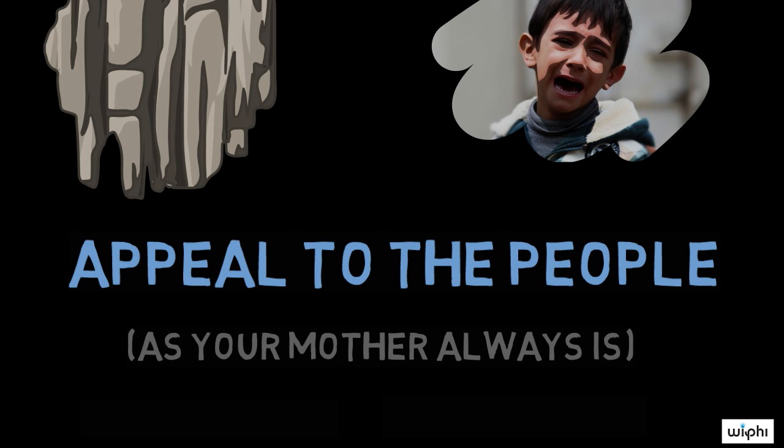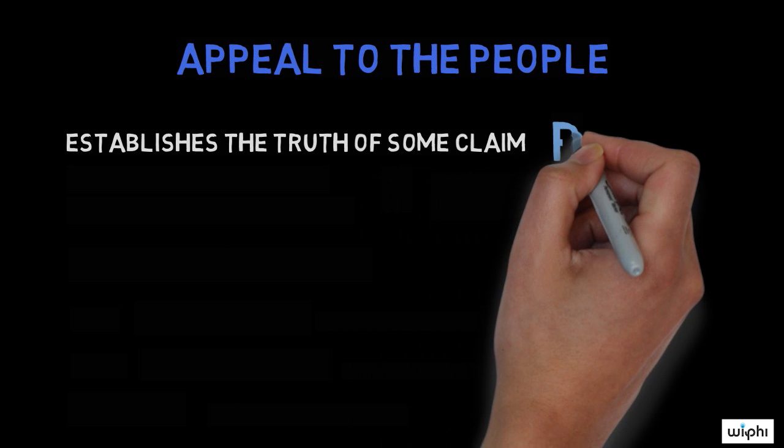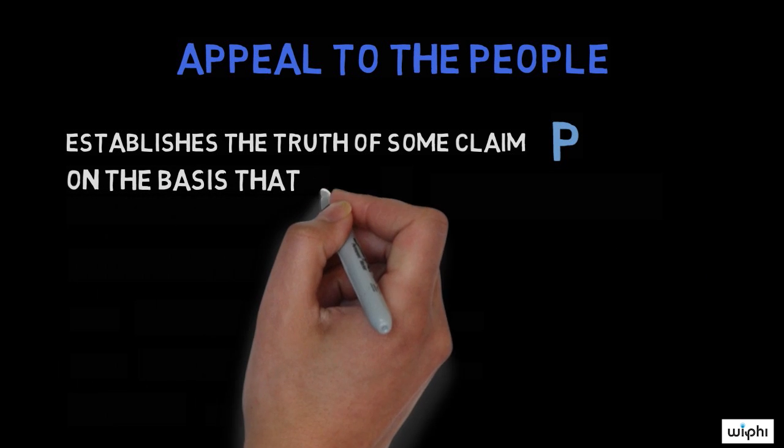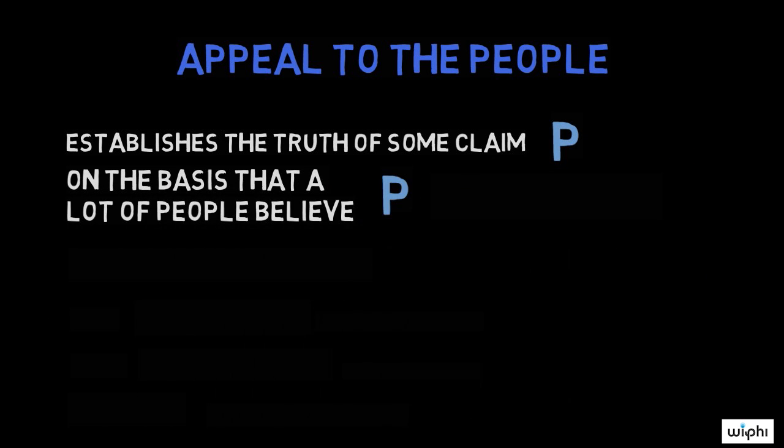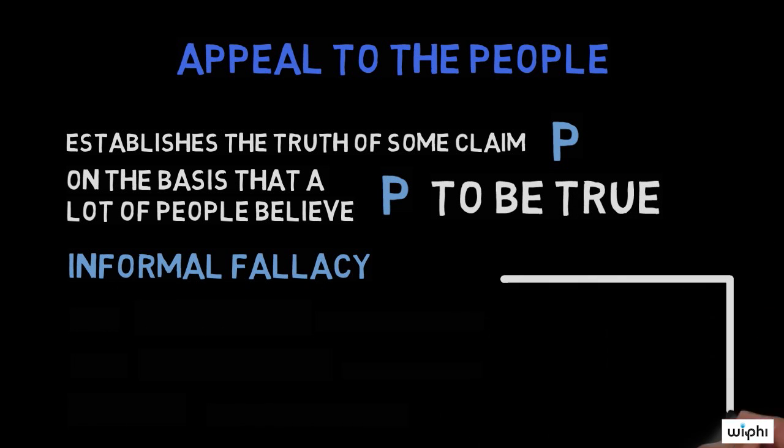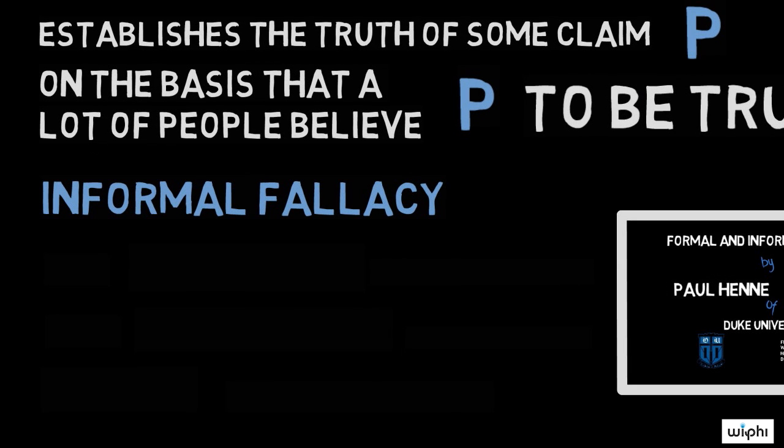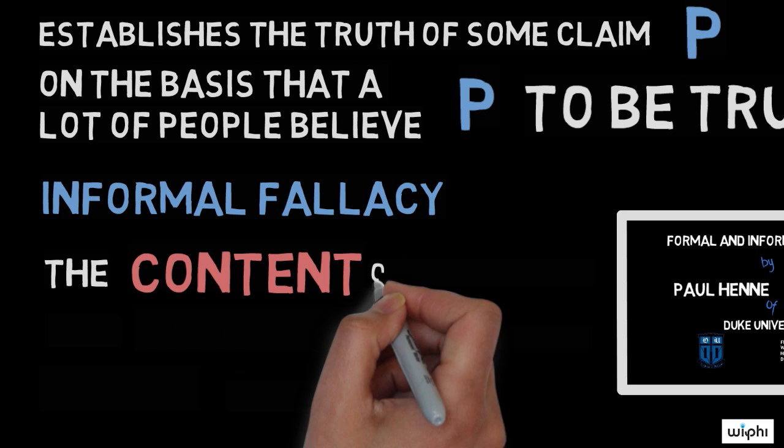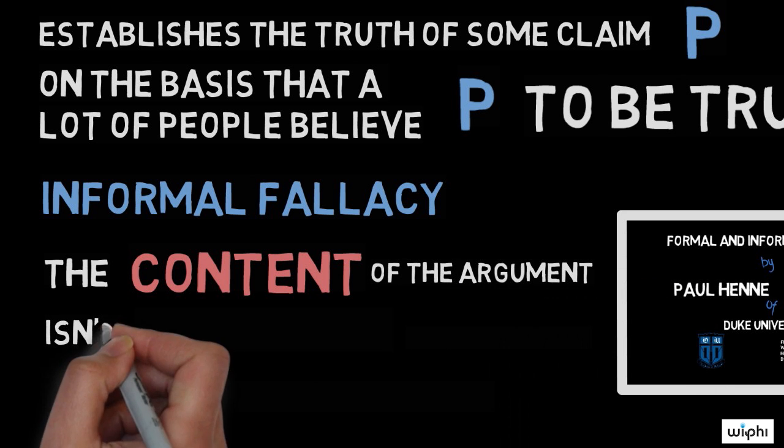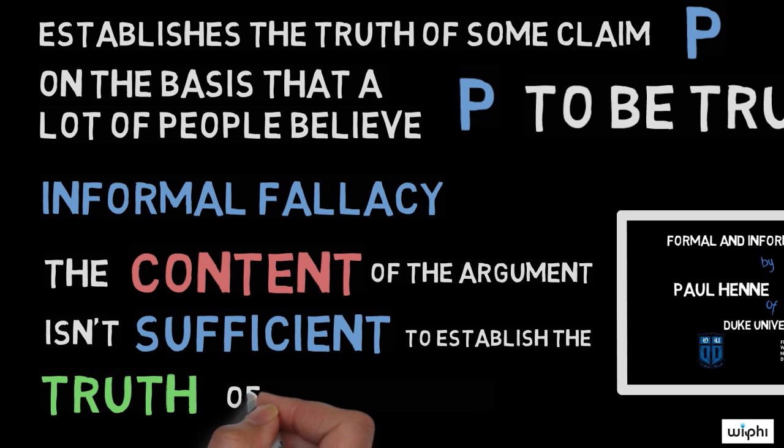Let's take a closer look at how this fallacy works. An appeal to the people tries to establish the truth of some claim, P, on the basis that a lot of people believe P to be true. Because it's an informal fallacy rather than a formal fallacy, we know that there's something wrong with its content rather than its form. In this case, the content that the argument provides in support of its conclusion simply isn't sufficient, or even necessarily relevant, to establishing the truth of that conclusion.